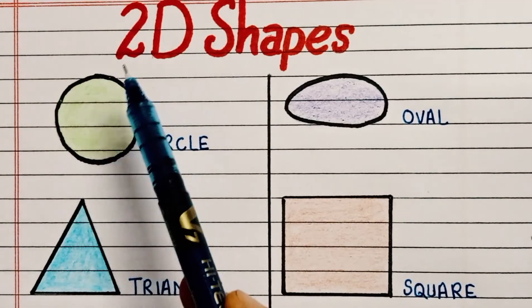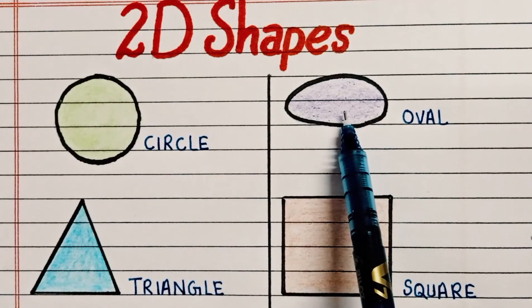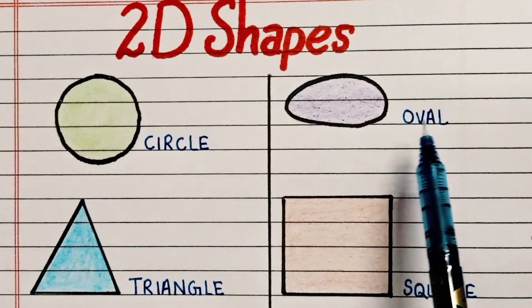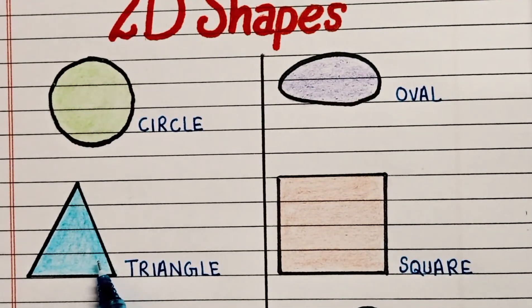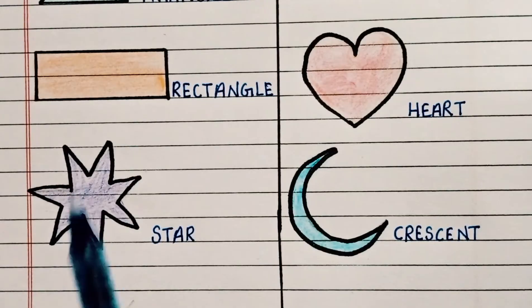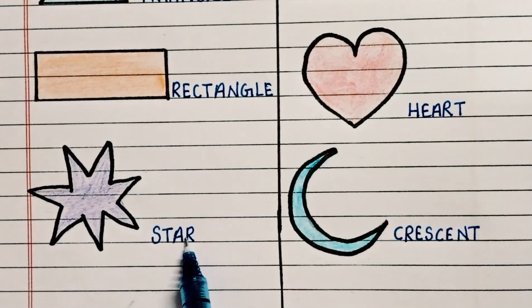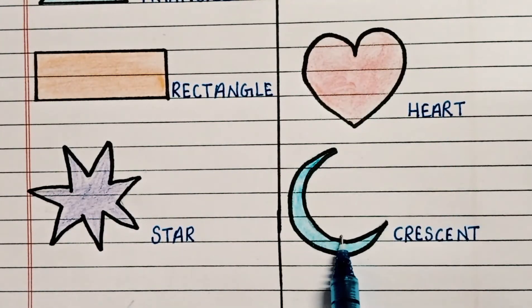Let's repeat 2D shapes. This is a circle. This is an oval shape. Triangle shape. Square shape. Rectangle shape. Star shape. Heart shape. Crescent shape.